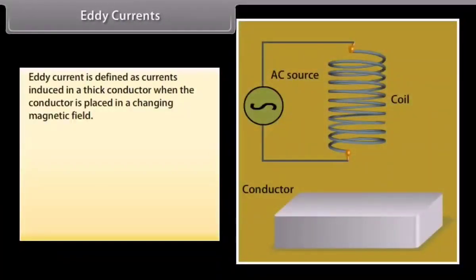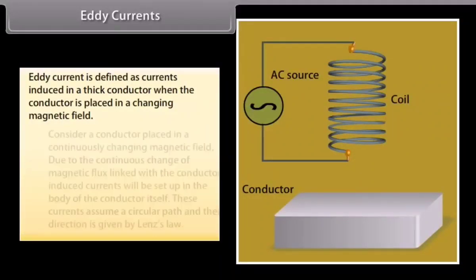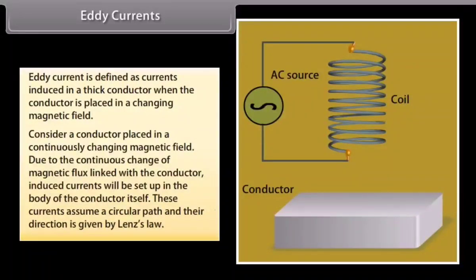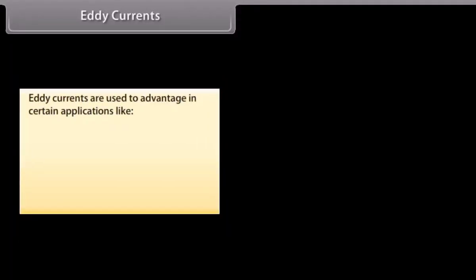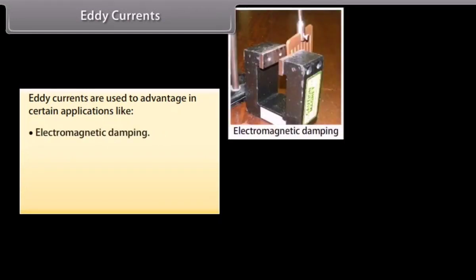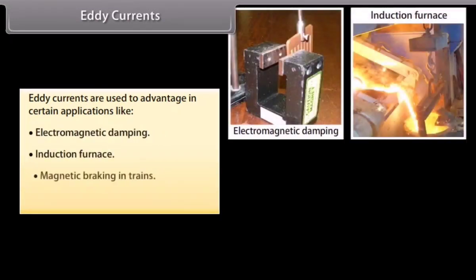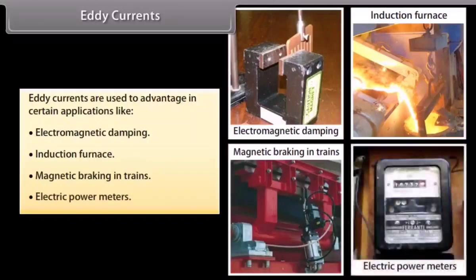Eddy currents are defined as currents induced in a thick conductor when the conductor is placed in a changing magnetic field. Due to the continuous change of magnetic flux linked with the conductor, induced currents are set up in the body of the conductor itself. These currents assume a circular path and their direction is given by Lenz's law. Eddy currents are used to advantage in applications like electromagnetic damping, induction furnace, magnetic braking in trains, and electric power meters.